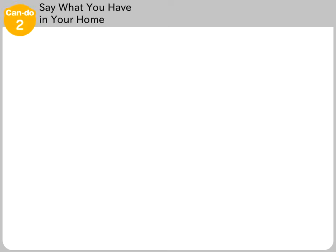Say what you have in your home. 私の家にエアコンがあります。 There is an air conditioner in my home.